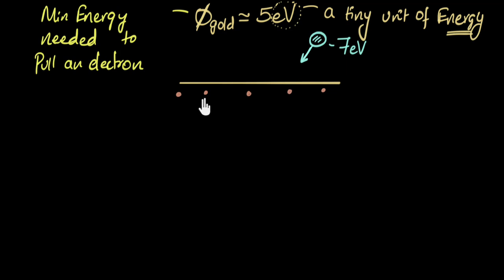So I shine light whose photons have seven electron volts of energy. I know the minimum energy needed to pull this electron is five electron volts. The important part is the minimum over here. My question to you is, what energies do you think the electrons will come out? What will be their kinetic energy when they come out of this metal? I want you to pause the video and think a little bit about it.